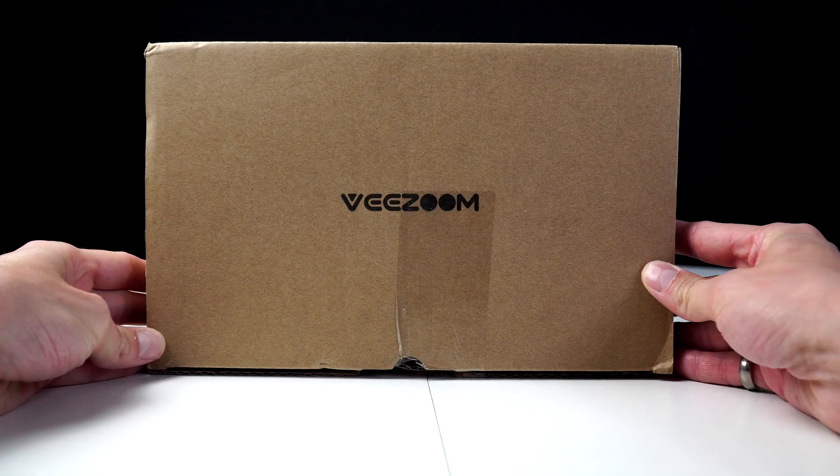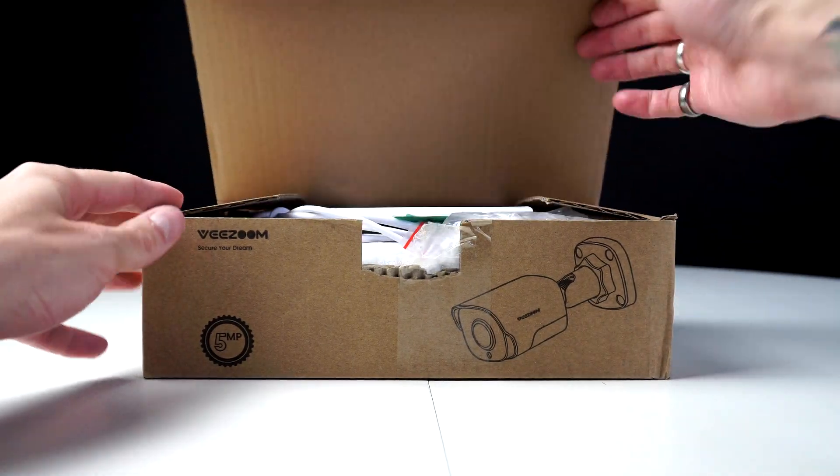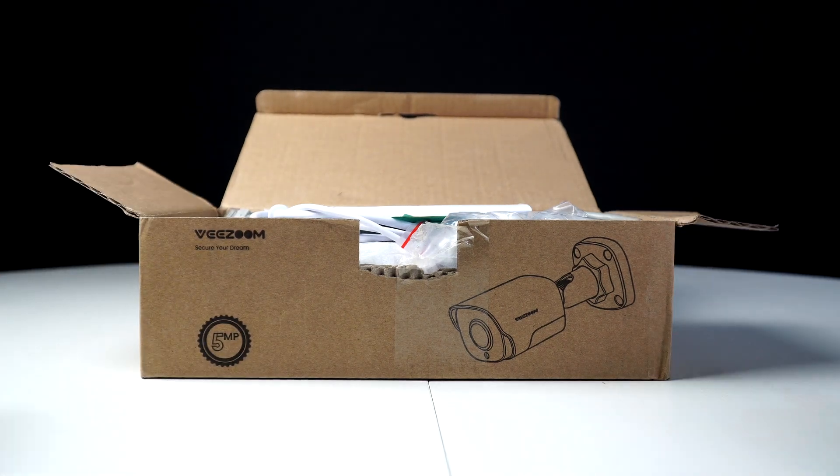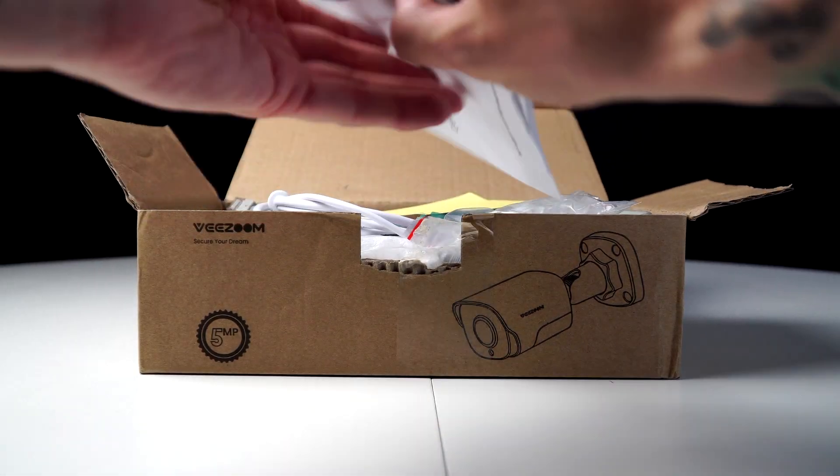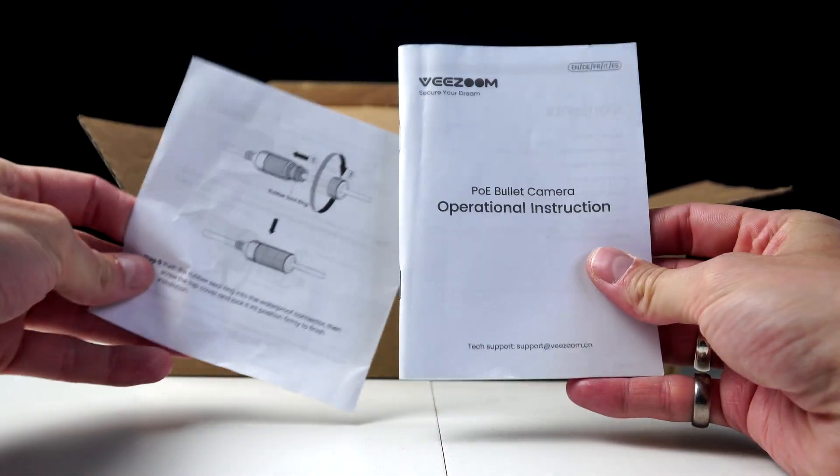We're looking at the VZoom 5 megapixel POE security cameras, which you can mount indoor or outdoor. We're going to set up one camera, then two cameras, and then we'll set up four cameras.